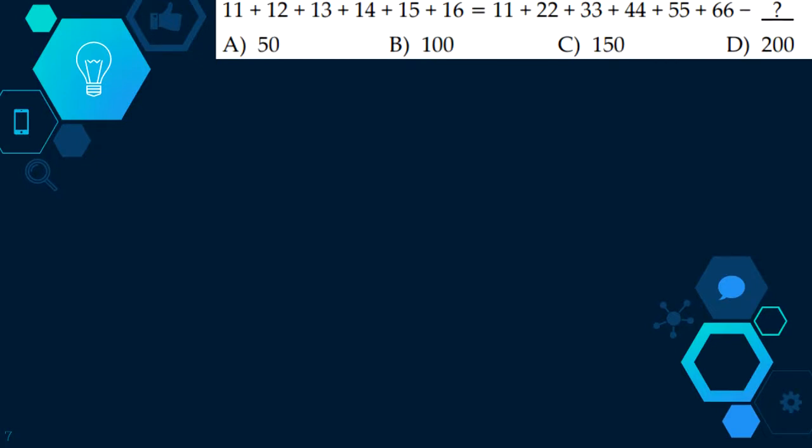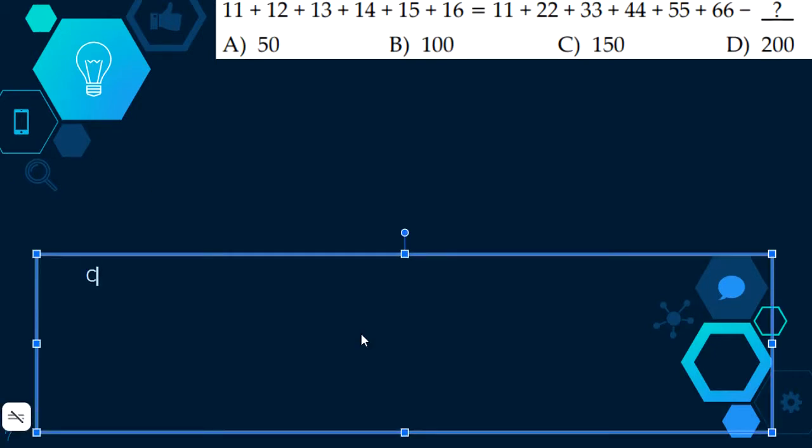Our next question is, eleven plus twelve plus thirteen plus fourteen plus fifteen plus sixteen equals eleven plus twenty-two plus thirty-three plus forty-four plus fifty-five plus sixty-six minus. In a calculator, we can put all these numbers in, and what we would get for the first part is eighty-one. If we noticed, eleven plus twenty-two plus thirty-three plus forty-four plus fifty-five plus sixty-six is two hundred and thirty-one. So we just have to do two hundred and thirty-one minus eighty-one, and we would get our answer for that one's blank spot. Two thirty-one minus eighty-one is one hundred and fifty. So our answer is C, one hundred and fifty.